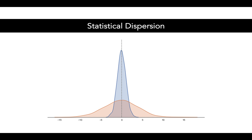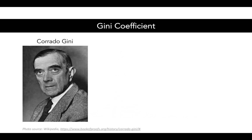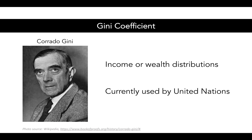Statistical dispersion just refers to how values are spread out among your data, and you probably already know that standard deviation could be used to measure this. I want to introduce you to another way to measure statistical dispersion, namely the Gini Coefficient. The Gini Coefficient was introduced about 100 years ago by Corrado Gini, and its original purpose was to understand income or wealth distributions. In fact, the United Nations continues to use the Gini Coefficient in order to understand wealth inequities among various different nations.